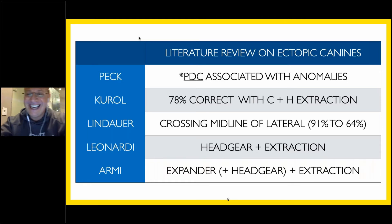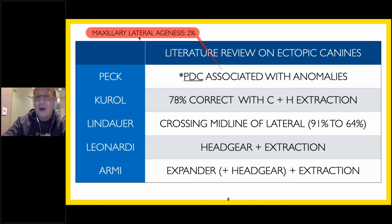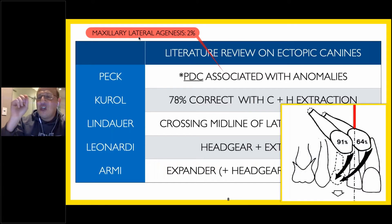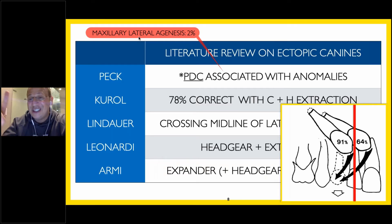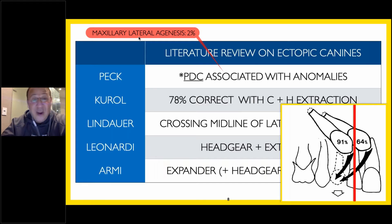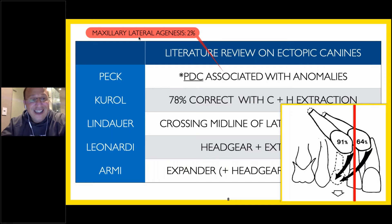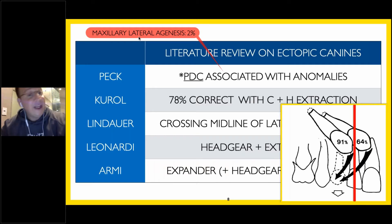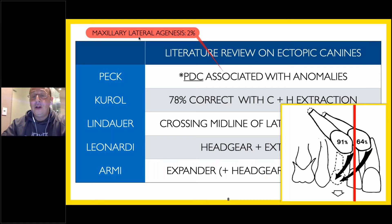It's even better if you take out B, C, H, and I. Steve Lindauer went one step further and said that if you can extract that deciduous cuspid before the maxillary adult canine crosses the midway point on the lateral incisor, you'll have the highest level of success. So it's not just taking out C and H — we have to take C and H out before the canine crosses over the lateral root. Otherwise that 78 percent goes down to 64 percent. Leonardi and Armie added to this: they said if you distalize the upper arch, if you create arch length with a cervical headgear or perhaps even a Herbst appliance, that canine will better auto-correct — so 78 percent turns to 82 percent turns to 84 percent.